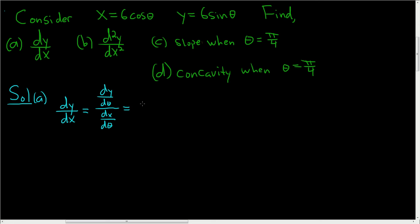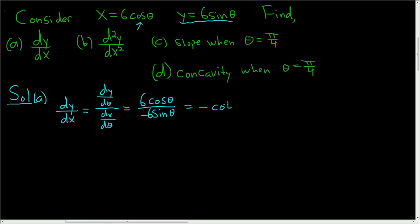dy/dθ is the derivative of y with respect to θ. The derivative of sine is cosine, so this will be 6 cosine θ divided by the derivative of cosine, which is negative sine θ — and let's not forget the 6. So this is equal to negative cotangent θ. That's the answer to part A.